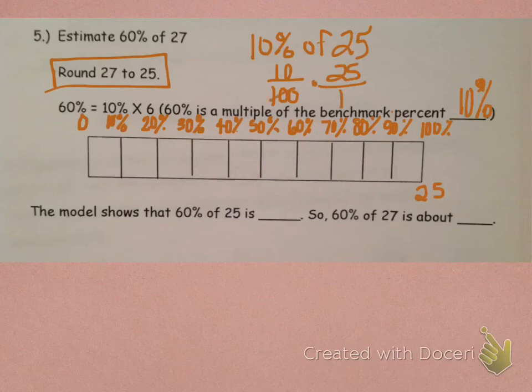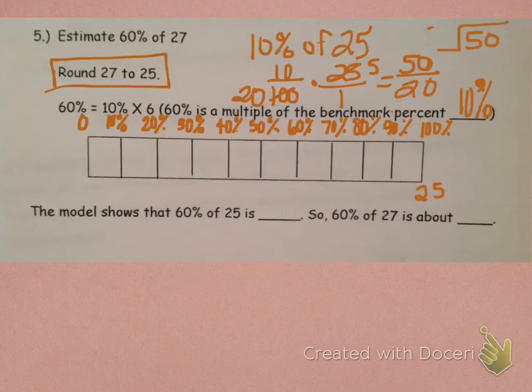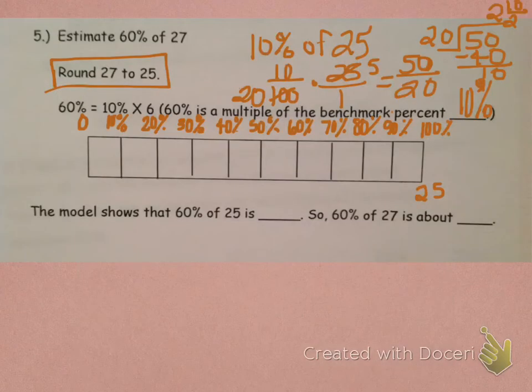Okay, so, we could say 5 goes into 100, 20 times, and then goes into 25 five times. So, then we would multiply straight across, giving us 50 over 20. And we would have to divide that out, 50 divided by 20. 20 goes into 50, 2 times. And then, I have 40 left over, which gives me 10. We have 2 and 10 over 20, because we put our remainder on top of what we're dividing by.